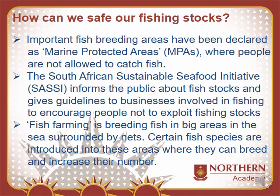Fish farming is breeding fish in big areas in the sea surrounded by nets. Certain fish species are introduced into these areas where they can breed and increase their numbers.